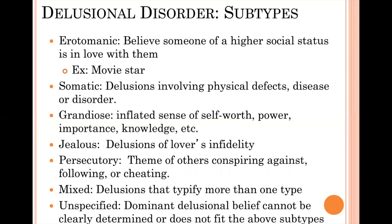The difference between somatic delusional disorder and body dysmorphic disorder is that in delusional disorder you may not see the extreme behavioral changes seen with body dysmorphic disorder — they hold the belief but don't act as though it were true. In body dysmorphic disorder, they engage in a variety of behaviors to try to cover up their perceived bodily flaw. Grandiose delusions involve inflated beliefs about one's own worth, importance, power, or knowledge.